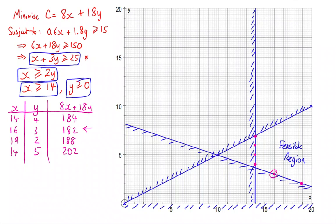That one there is giving us our minimum. So x is equal to 16, so 16 of size A, and y is equal to 3. And the minimum cost is actually equal to 182 pounds. And so that's how we can go from a worded problem to the constraints and the linear programming problem, down to graphing it and solving it.